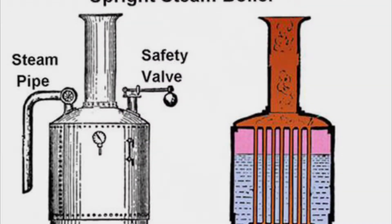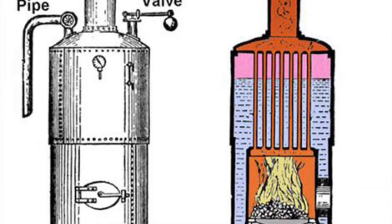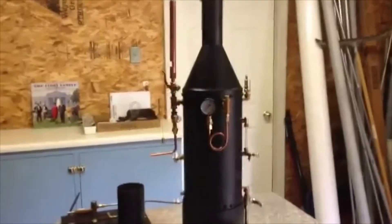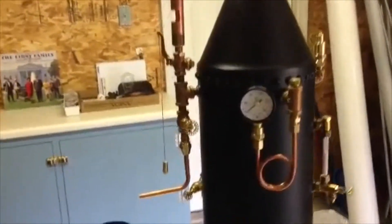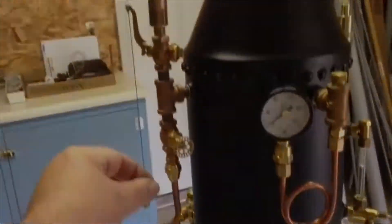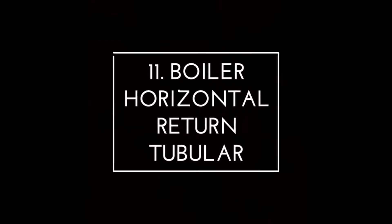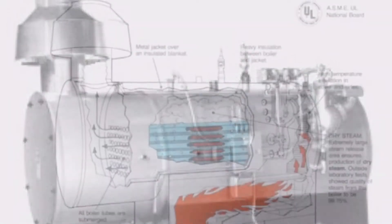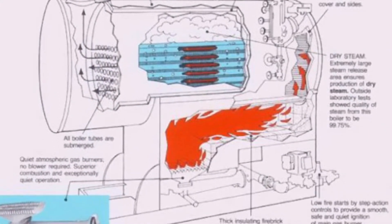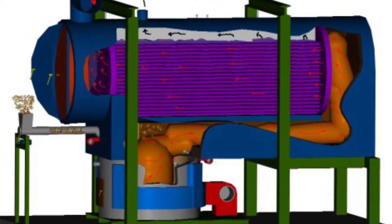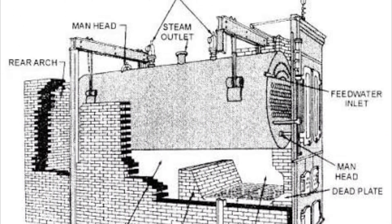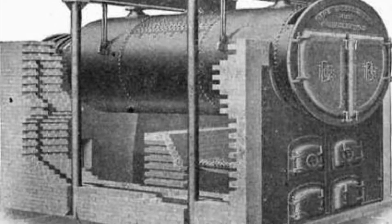Vertical fire tube boilers arrange fire tubes vertically. This type offers design advantages and a less complicated manufacturing process: the combustion chamber is located under the water tank, with exhaust gas pipes arranged vertically inside the tank. The horizontal return tubular boiler is similar to other fire tube boilers but differs in that the combustion chamber is positioned not inside the water tank but underneath it. The fire tubes inside the tank are only passed by hot exhaust gas coming from combustion in the external chamber.